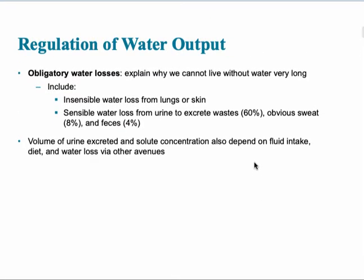Water output regulation. First, there's what's called obligatory water losses, which explains why we can't live without water very long. This includes insensible water loss — water lost from the lungs, water that vaporizes in expired air that we exhale, and water that diffuses from the skin. Sensible water loss includes urine excretion at 60%, sweat, and water loss in the feces — which can be much more with diarrhea and much less with constipation.